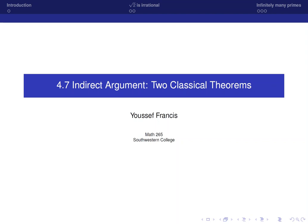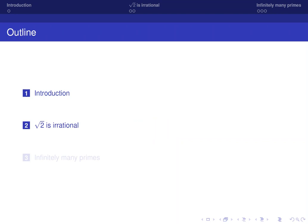Section 4.7 is titled Indirect Argument, Two Classical Theorems. In this section we're going to prove two major theorems. We're going to prove that square root of 2 is irrational and that there are infinitely many prime numbers.